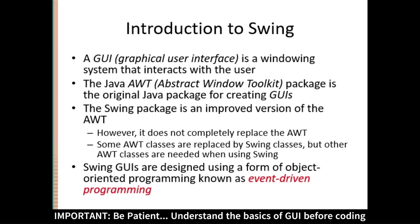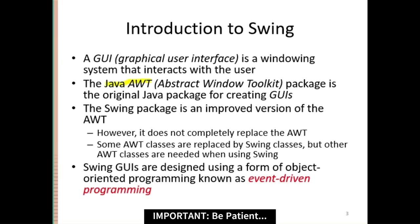In Java, if you need to develop a graphical user interface, there are a number of packages already defined in Java. One of the packages is called Java AWT — AWT stands for Abstract Windows Toolkit. This is a package that was originally defined in Java and you can still use it to develop a full-fledged GUI application. But in Java, there is another package called the Swing package, which is an improved form of AWT.